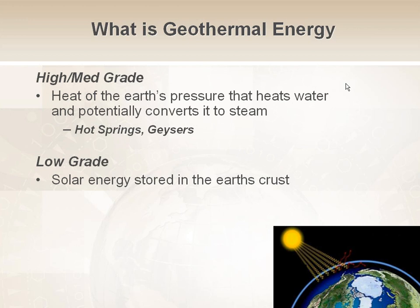Low-grade geothermal energy actually comes from an external source — the sun. Low-grade geothermal energy is energy absorbed from the sun into the Earth's crust. This is why it's available everywhere on Earth. Low-grade is what we use for geothermal in HVAC applications.